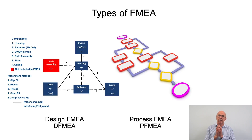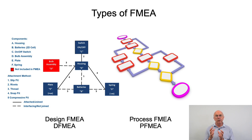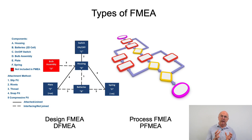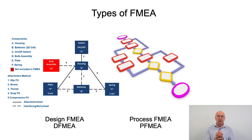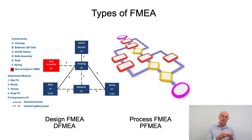There are two types of FMEA referenced in IATF 16949: a design FMEA, sometimes shortened to DFMEA, and a process FMEA, sometimes shortened to PFMEA. If we're doing a design FMEA, we can do it at a component level, at the subsystem level, or at the overall system level. We can use tools like a block diagram not just to look at individual components, but to look at how individual components are joined together into a subsystem or a system.